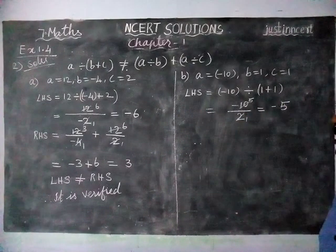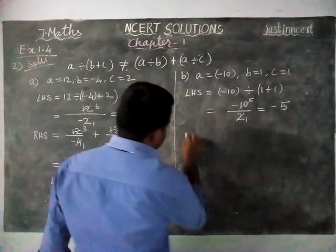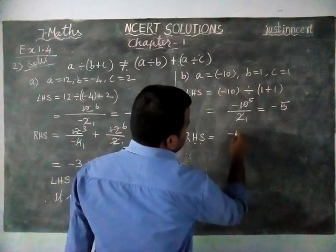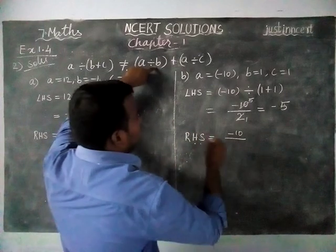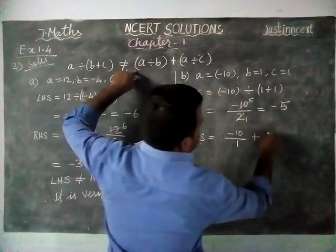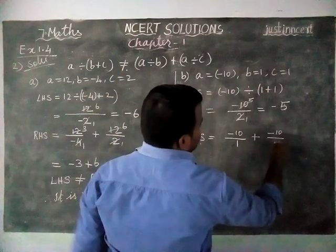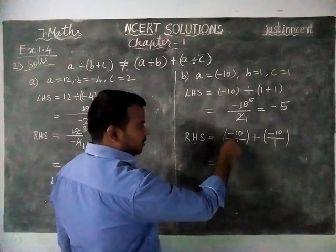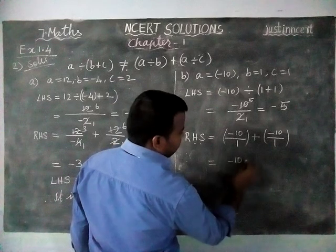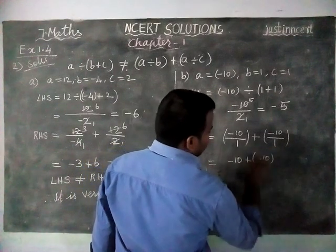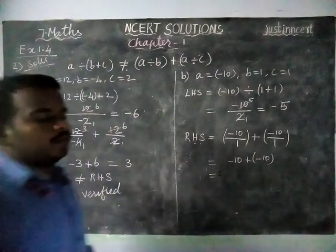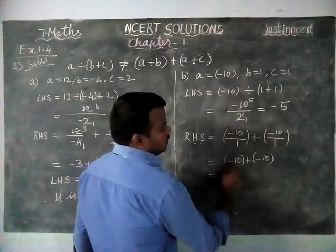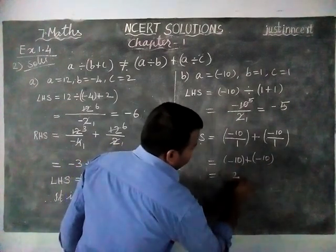Right hand side is equal to A divide B plus A divide C, which is minus 10 divide by 1 plus minus 10 divide by 1. When we divide by 1, the same answer comes, so minus 10 plus minus 10. When adding, if both have the same sign, we add and use the same sign. So 10 plus 10 is 20, both also minus, so the answer is minus 20.